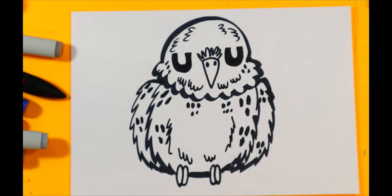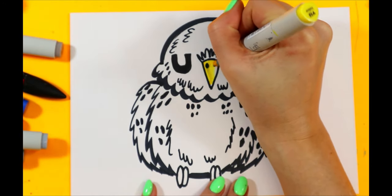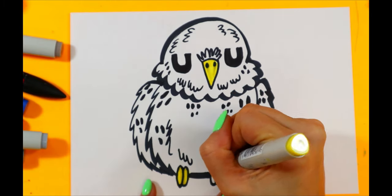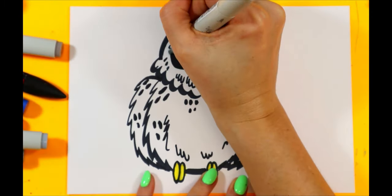Now we're going to go ahead and color it in with our choice colors. Now there's not too much to add because it is a snowy owl. You can color in the beak, the feet, and then I like to just take a gray and just use that to shade.